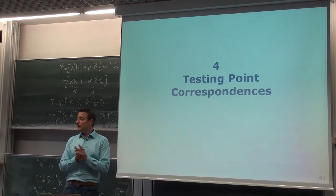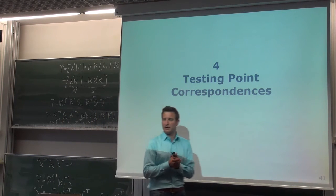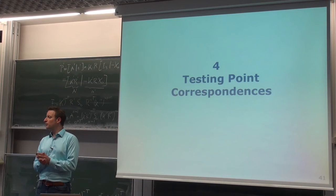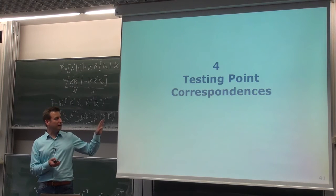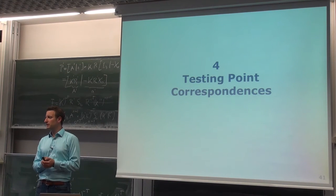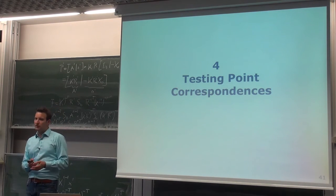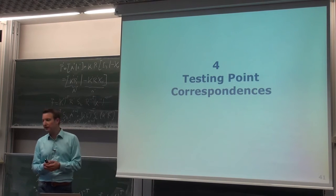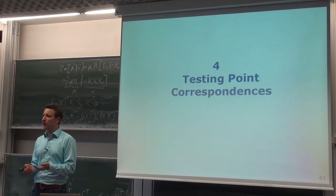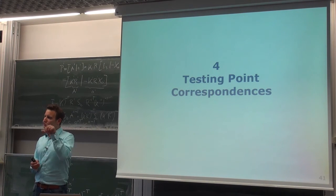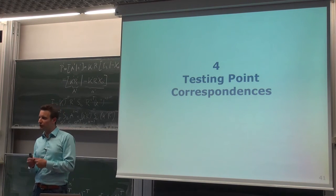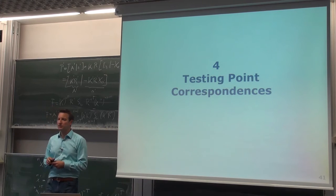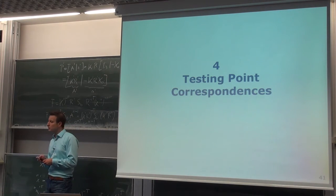Given the fundamental matrix, we can formulate a statistical test to check if two points are likely to be corresponding points, by testing how well the coplanarity constraint is satisfied. In practice, x-prime-T · F · x-double-prime will not be exactly zero due to measurement noise. So the question is: how far from zero can we accept while still considering points as corresponding?